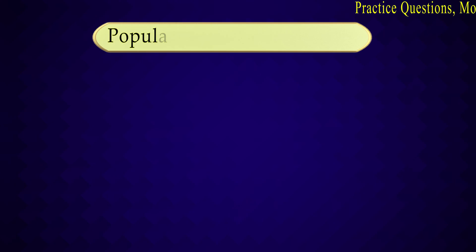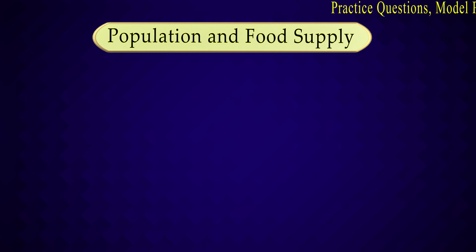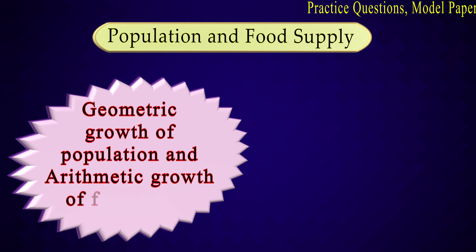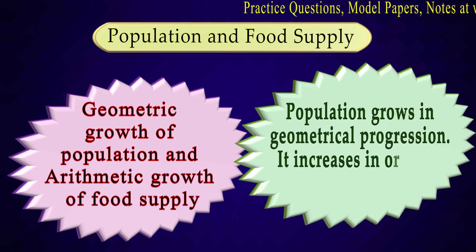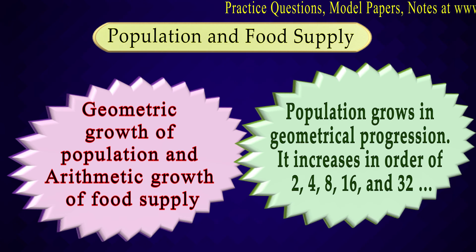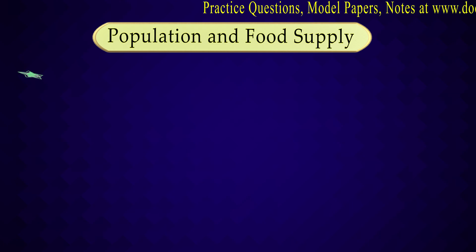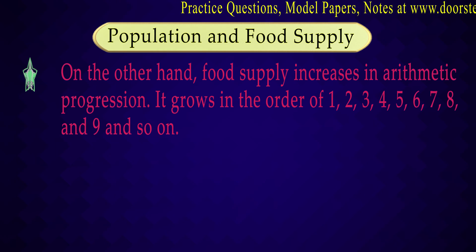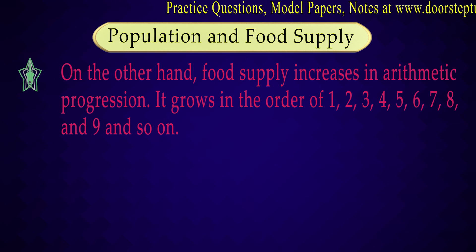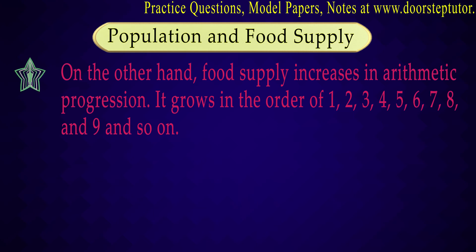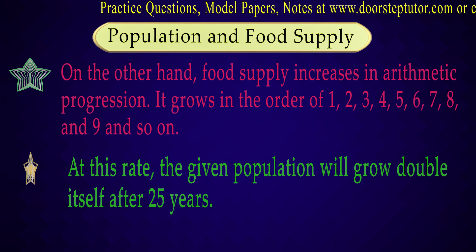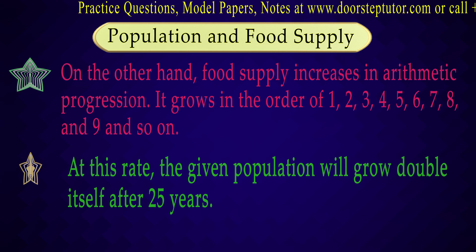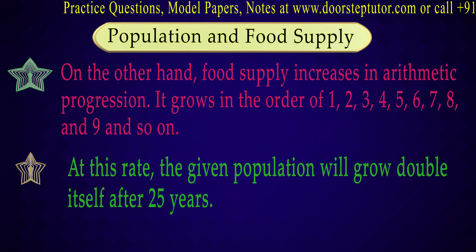Malthus talked about population and food supply. He said that there is geometric growth of population and arithmetic growth of food supply. When the population is increasing at the rate of 2, 4, 8, 16, 32, 64 and so on, the food supply is increasing at a slower arithmetic rate — 1, 2, 3, 4, 5 and so on. At this rate, the population will double itself in 25 years, but the food supply will not increase in the same manner.